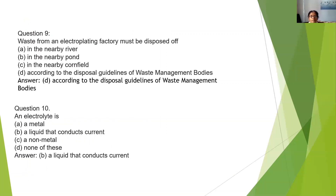Waste from an electroplating factory must be disposed of — in the nearby river, nearby pond, nearby cornfield, or according to the disposal guidelines of waste management bodies? It should not be dumped in rivers, ponds, or cornfields. The correct answer is: according to the guidelines given by waste management bodies. An electrolyte — is it a metal, a liquid that conducts current, a non-metal, or none of these? An electrolyte is a solution that conducts electricity. So the answer is: a liquid that conducts current.